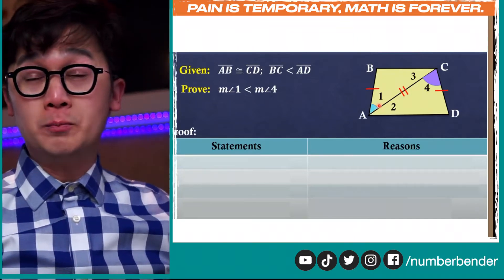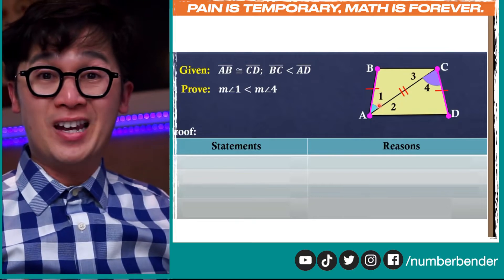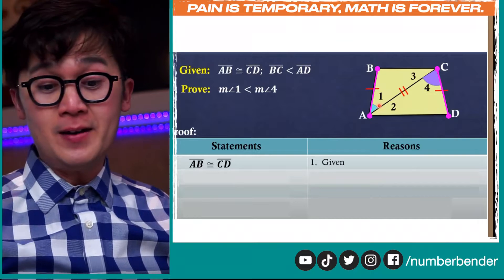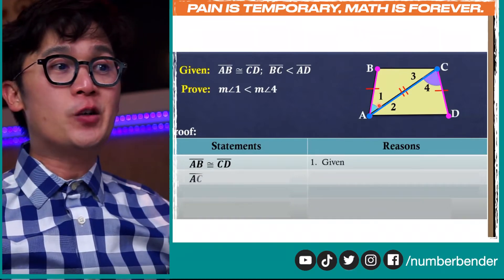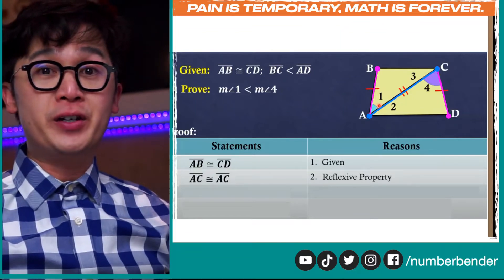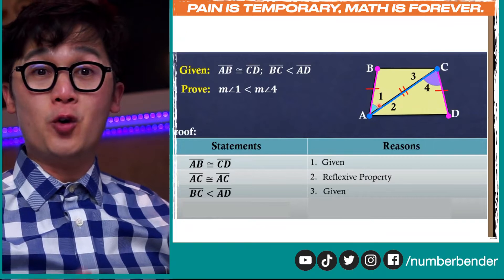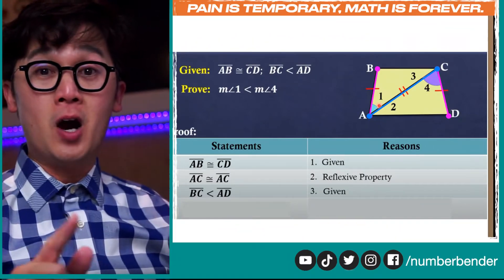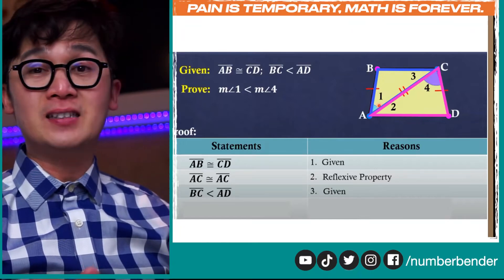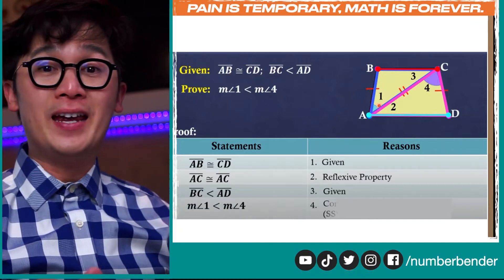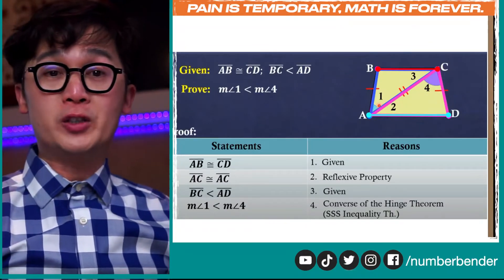This is how we write a two-column proof given a complex figure. It's a lot easier when we draw our figure and start with the given information. AB is congruent to CD because it's given; AC is congruent to AC by the reflexive property since it's common to triangles BCA and CDA; BC is less than AD as given; and with this we show that the measurement of angle 1 is less than angle 4 using the converse of the hinge theorem, also known as the SSS inequality theorem.